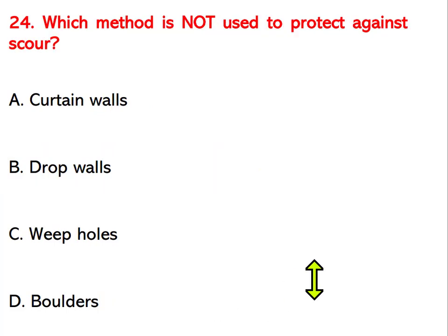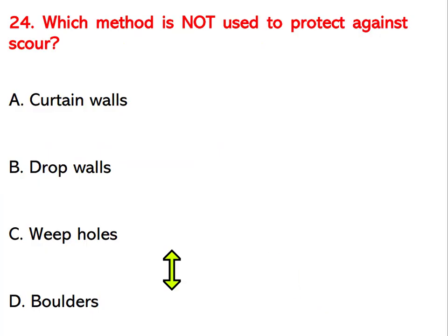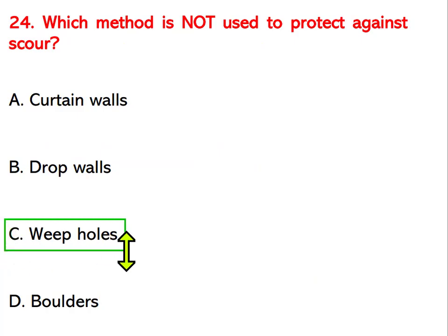Which method is NOT used to protect against scour? Options are curtain walls, drop walls, weep holes, or boulders. The right answer is weep holes.